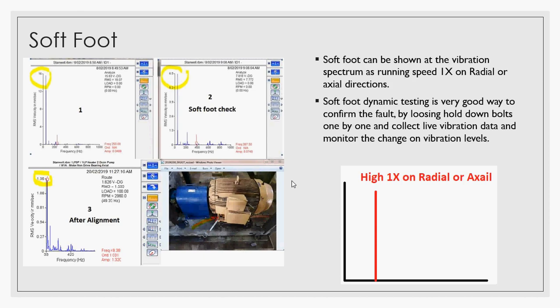By the way, you can see it on the radial or axial direction, and you can check this by doing soft foot dynamic testing, which is a very good way to confirm the fault. You can loosen one of the hold-down bolts one by one and collect live vibration data and monitor the change on the vibration level.